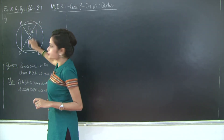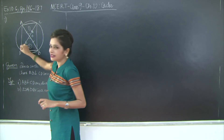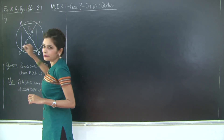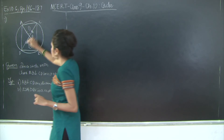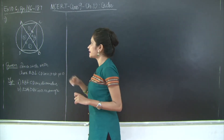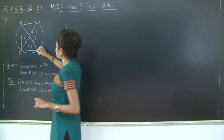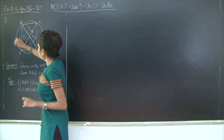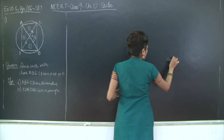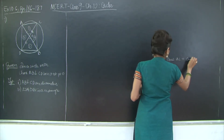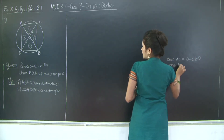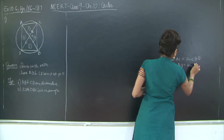Since these two triangles are congruent, AC equals BD through corresponding pairs of congruent triangles. Therefore arc AC equals arc BD. Similarly we can prove that triangles AOD and BOC are congruent by SAS, giving us AD equal to BC and therefore arc AD equals arc BC.